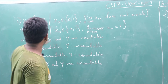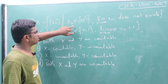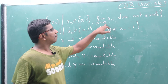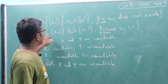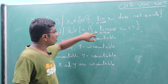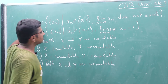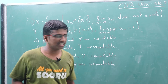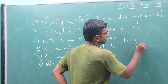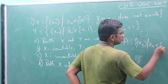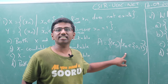The first question is about two sets and their countability. The first set is the set of all sequences xn such that the entries are 0s and 1s, and the limit as n tends to infinity of xn exists. The second set is the set of all xn such that xn entries are 0s and 1s. The set of all sequences with entries from 0s and 1s is uncountable.